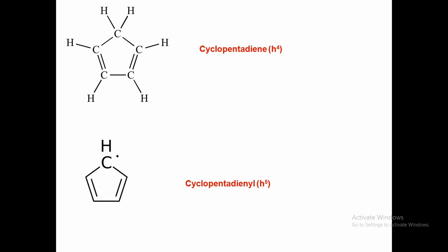In the ferrocene molecule, the cyclopentadienyl is present and each carbon of the cyclopentadienyl contributes to bonding with the metal. There is a distinction between cyclopentadienyl and cyclopentadiene: cyclopentadiene is a 4-electron donor (η4), while cyclopentadienyl is a 5-electron donor (η5). In ferrocene, the cyclopentadienyl ring donates 5 electrons each, totaling 10 electrons to the iron system.